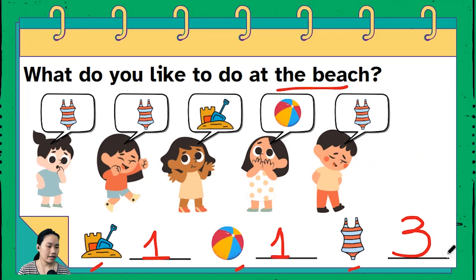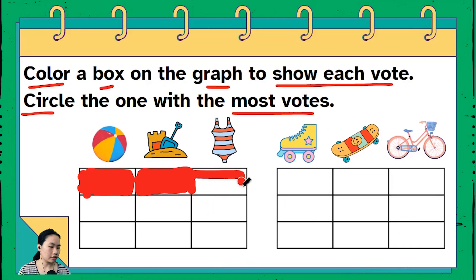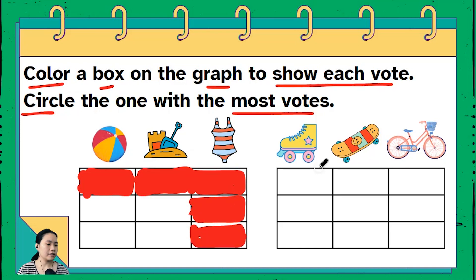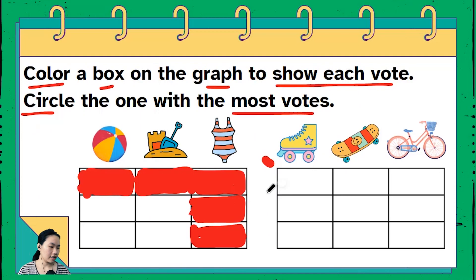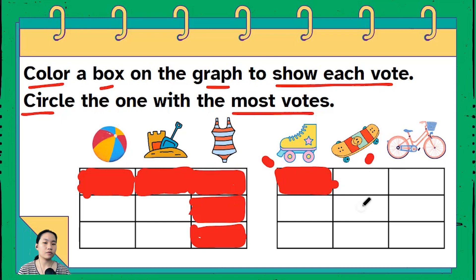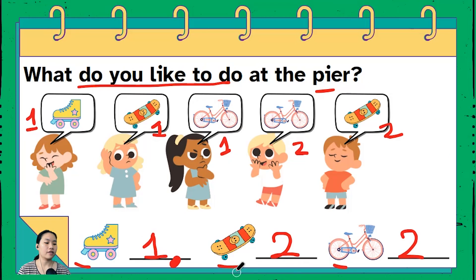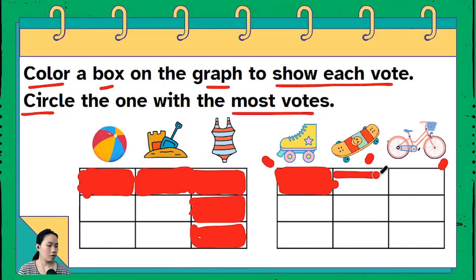For swimming — do you remember how many kids would love to go swimming? There are three — let's color three rectangles: one, two, and three. Now for our next graph — the pier activities. First item: roller skate — there's only one kid, so I'm coloring one rectangle. Second, skateboard — there are two, so one rectangle and two rectangles.